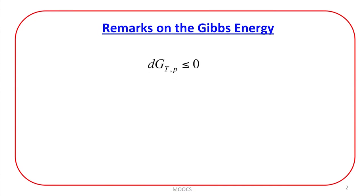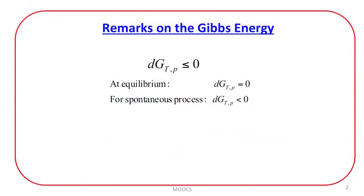Let us now discuss some remarks on Gibbs energy. The change in Gibbs free energy at constant temperature and pressure should be less than or equal to 0 — that is the criteria of spontaneity. And as we discussed in the previous lecture, if the process is reversible or if the process is at equilibrium, then there is no change in Gibbs free energy: dG at constant temperature and pressure is equal to 0. However, for spontaneity, the change in Gibbs free energy should be negative. This is the most widely used criteria of spontaneity, because it is easy to maintain temperature and pressure constant rather than maintaining temperature and volume constant.